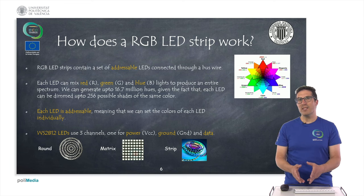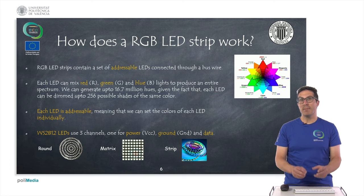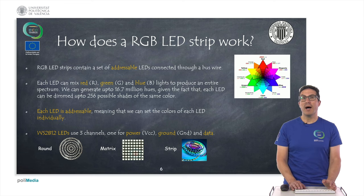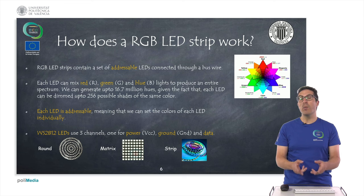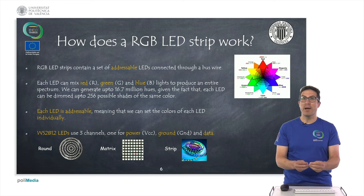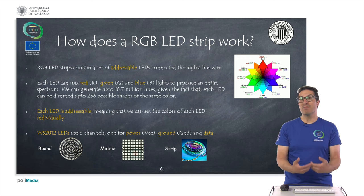Let's describe how some of the elements work. In particular, let's focus first on the RGB LED strip. Some LEDs can produce different kinds of colors, and by dimming the intensity of the light of these LEDs, when we combine three of these LEDs — combining red, green, and blue colors and dimming the light — we can produce up to 16.7 million hues, meaning variations of colors, with these kinds of LEDs.